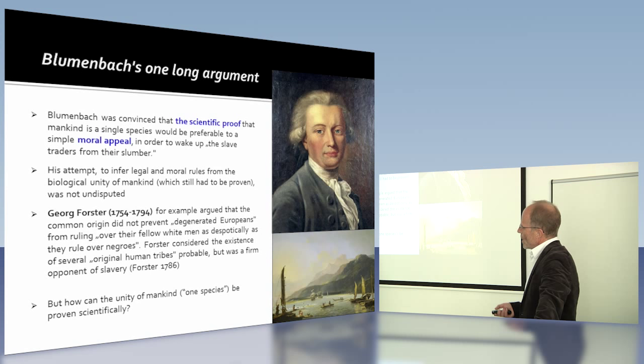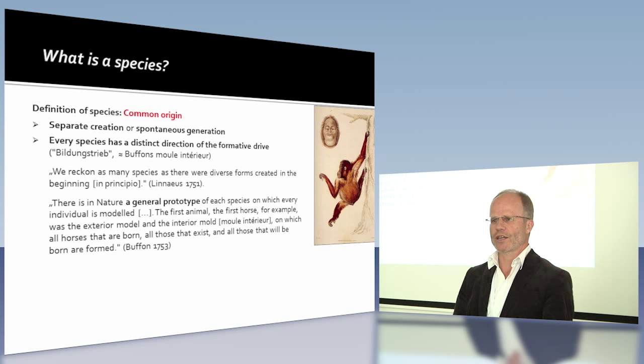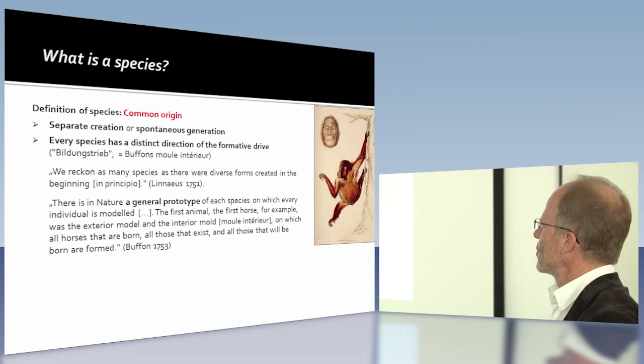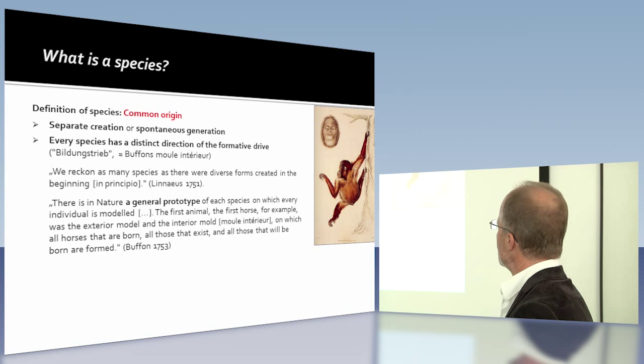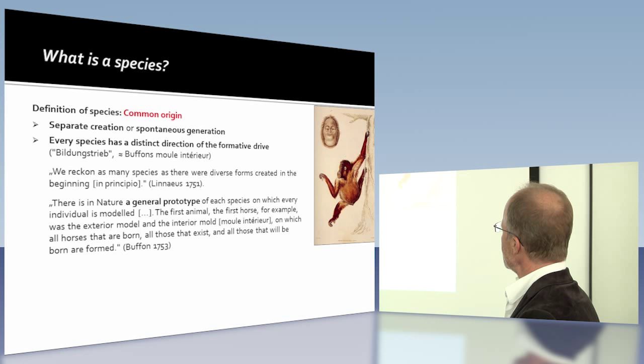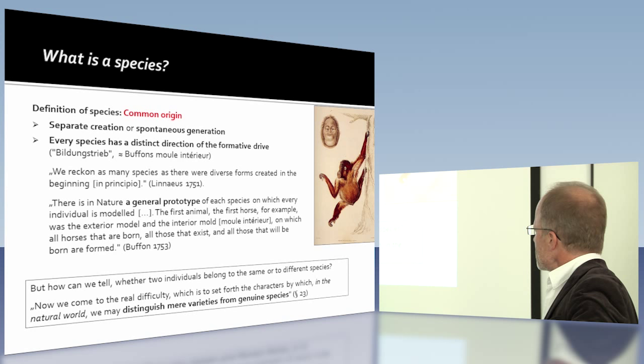So his problem was how to actually prove scientifically that there's only one species. That of course hinges on the question: what is a species? The common definition at that time from Linnaeus or Buffon was common origin — a species is everything that descends from one pair, one prototype as Buffon calls it. The first horse was the interior mold on which all horses are born. So you have a common origin, and you have to prove the common origin.